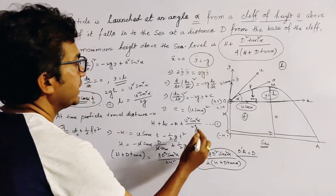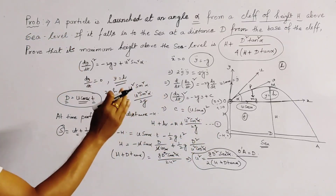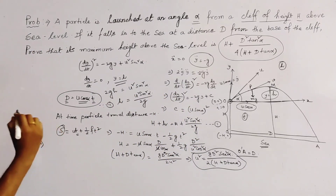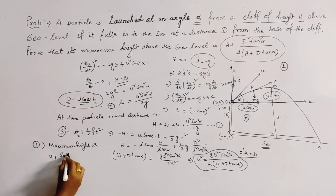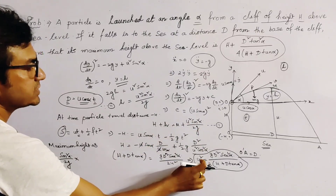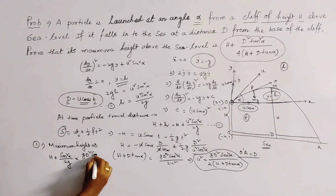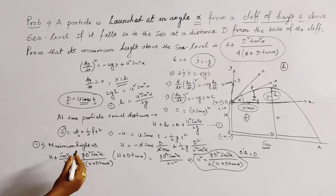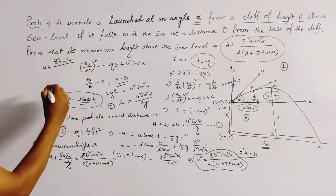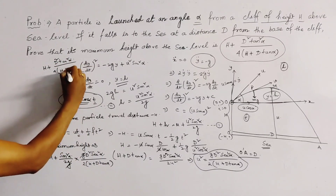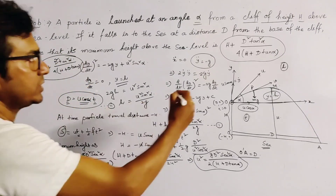Substituting the value of U² into equation (2) for maximum height h: h equals U² sin²alpha divided by 2g equals [gD² sec²alpha / (2(H plus D tan alpha))] times sin²alpha divided by 2g. Since sin²alpha times sec²alpha equals tan²alpha, and the g cancels, we get h equals D² tan²alpha divided by 4(H plus D tan alpha). Therefore the maximum height above sea level is H plus h, which equals H plus D² tan²alpha divided by 4(H plus D tan alpha). This is the required result.